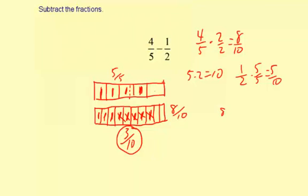And then we're going to have 8 tenths minus 5 tenths, which is 3 tenths. So you can say either way, you get the exact same answer, 3 tenths.